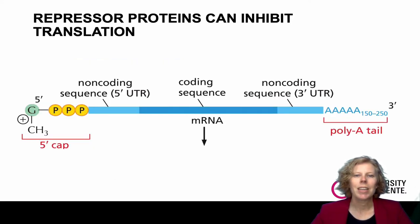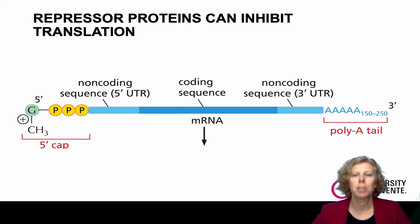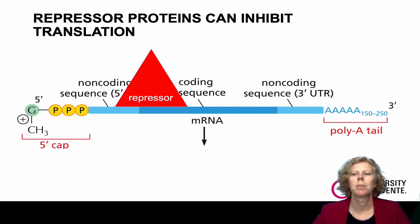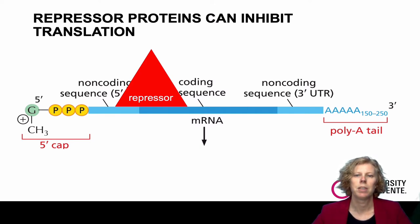In addition, mRNAs contain sequences in both the 5' untranslated region and 3' untranslated region that can be recognized by specific repressor proteins. The binding of these proteins prevents the ribosomes from finding the first AUG. When conditions change, this repressor is inactivated and translation of the mRNA can take place.